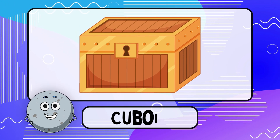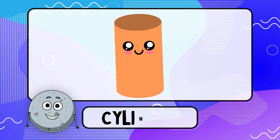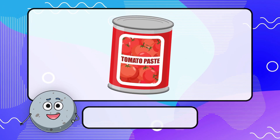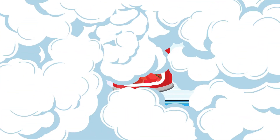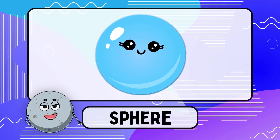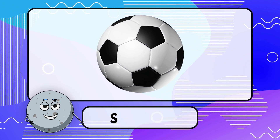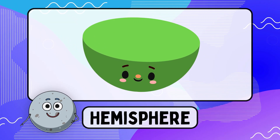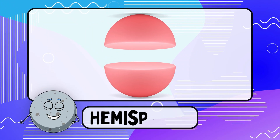Cuboid — the cuboid is like a box with six faces. Cylinder — the cylinder is like a can.